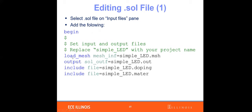Once we have our layer file, we need to add it to the solution file. Similar to previous projects, we load our mesh. Because my project name is Simple-LED, I load the mesh information as Simple-LED.msh. I specify the output file as Simple-LED.out, include the doping information as Simple-LED.doping, and include the material information as Simple-LED.matter. These four lines are very important at the beginning of your solution file.